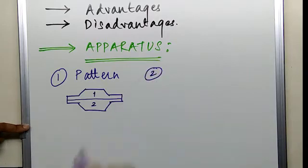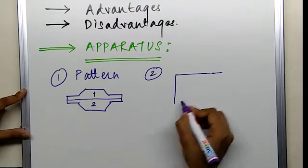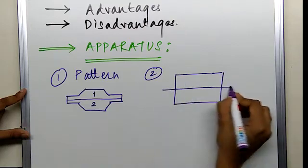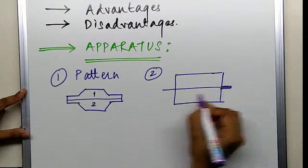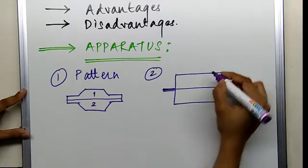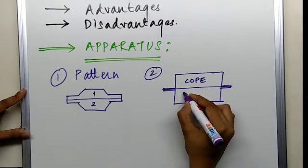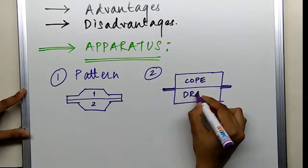Next is your boxes in which these patterns will be placed. There are two boxes which we will be using. The upper one is known as COPE. The lower one is known as DRAG.